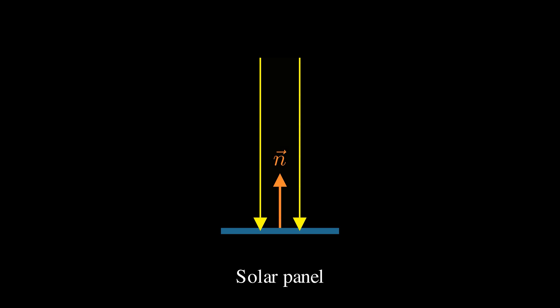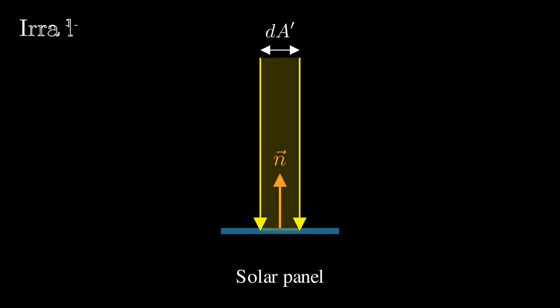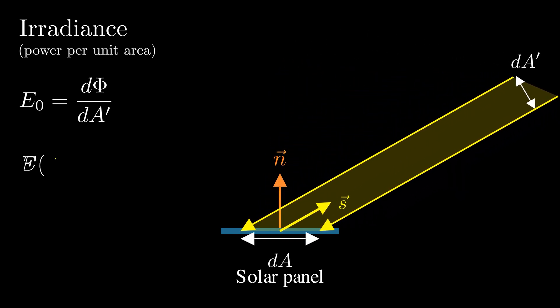When a beam of light hits a solar panel, it delivers energy. The rate of that energy per unit area is what we call irradiance. Now imagine the panel is facing the light directly. In that case, the panel receives the maximum irradiance, usually denoted as E0. But what if the light hits the panel at an angle θ? Same light, same energy, but now it spreads over a larger area on the surface. From simple geometry, we see that the two areas are associated with a factor of cos θ. So the irradiance becomes E0 times cos θ. This is known as Lambert's cosine law.